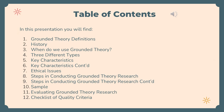Here we have attached a table of contents that will further identify what we plan to discuss within this presentation. In this presentation, you will find the definition of Grounded Theory, the history behind the Grounded Theory method, when to use the Grounded Theory method, three different types, key characteristics, ethical issues, steps in conducting Grounded Theory research, a sample study, evaluating Grounded Theory research, and a checklist of quality criteria.